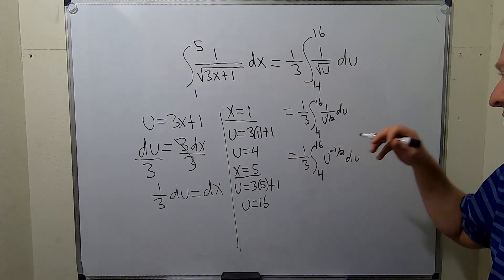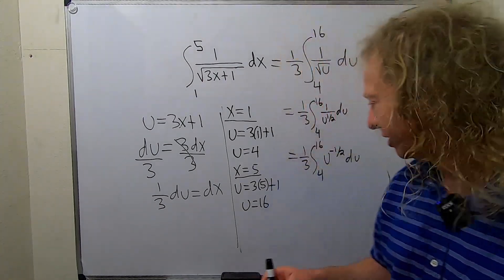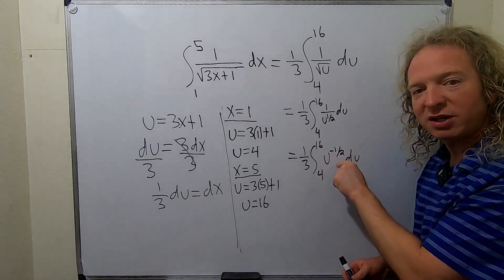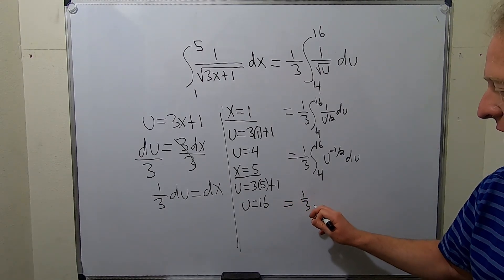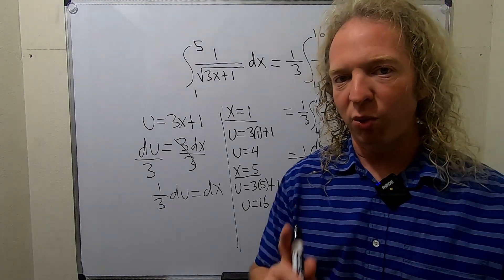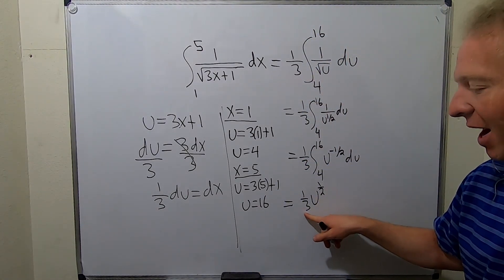And so the reason you do that is because to integrate this you want to use a formula. So you want to use the power rule. So now we can do that. So basically you add 1 and divide by the result. So this is equal to 1 third u, negative 1 half plus 1 is 1 half. So this is 1 half. And then we're dividing by 1 half.